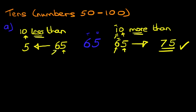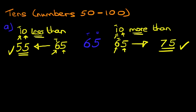Now, the tens — we have a 6. And in the 10 we have a 1. Both of them are tens, so the 6 is going to go back by 1. 6 counting back by 1 is 5. And that is our answer: 10 less than 65 is 55.